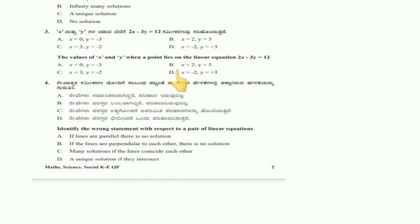With option C, x is equal to 3, y is equal to minus 2: 3 to the 6, 3 minus 2 plus 6, 6 plus 6 is 12. So option C is correct.